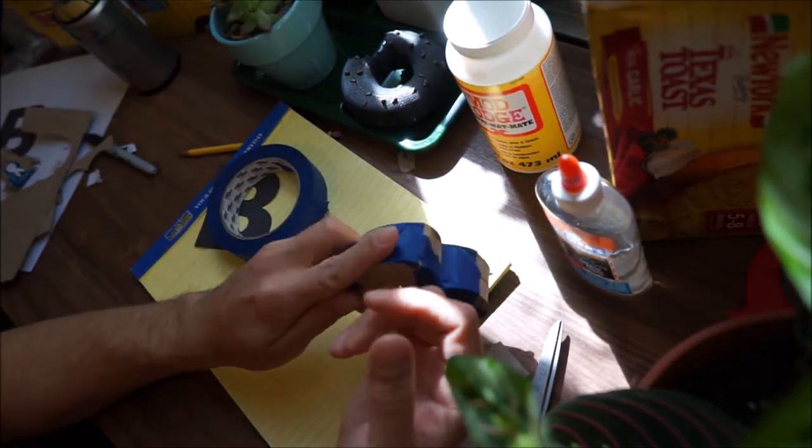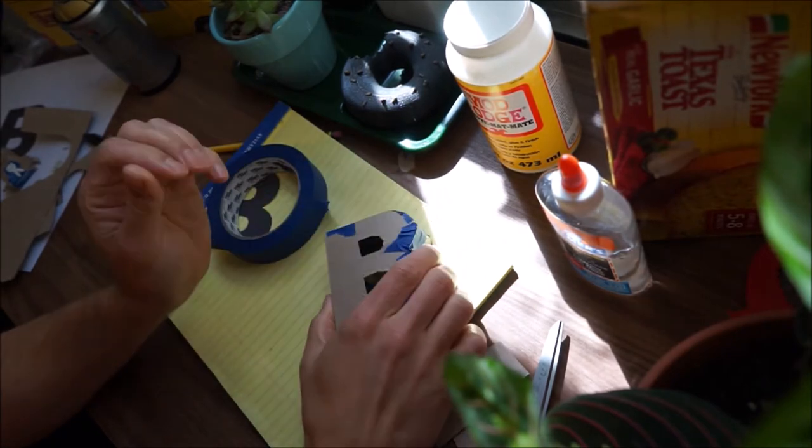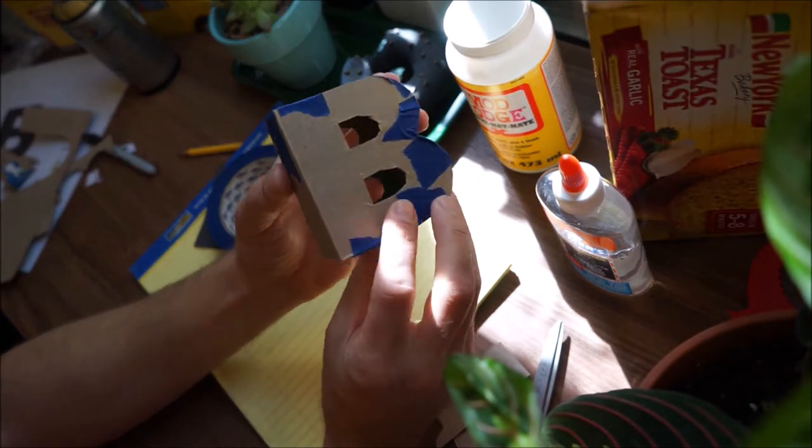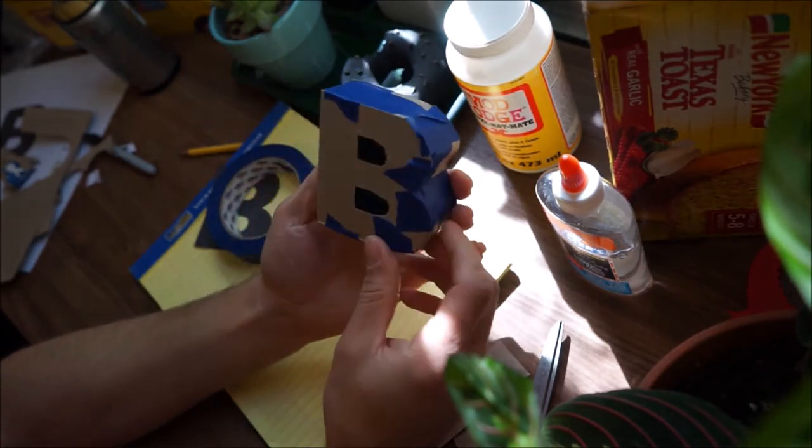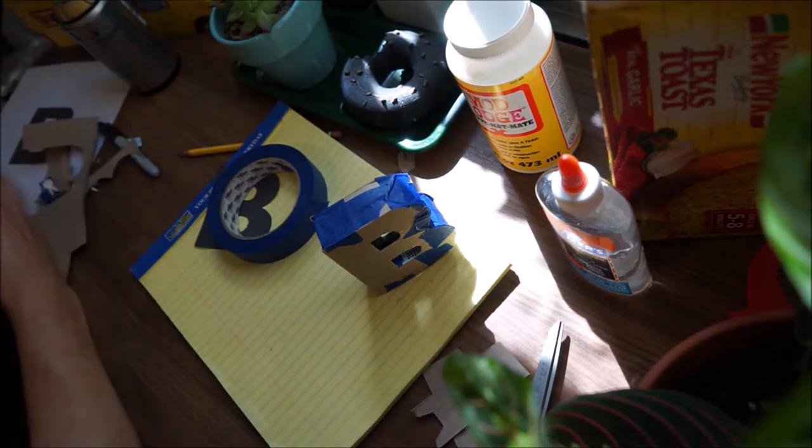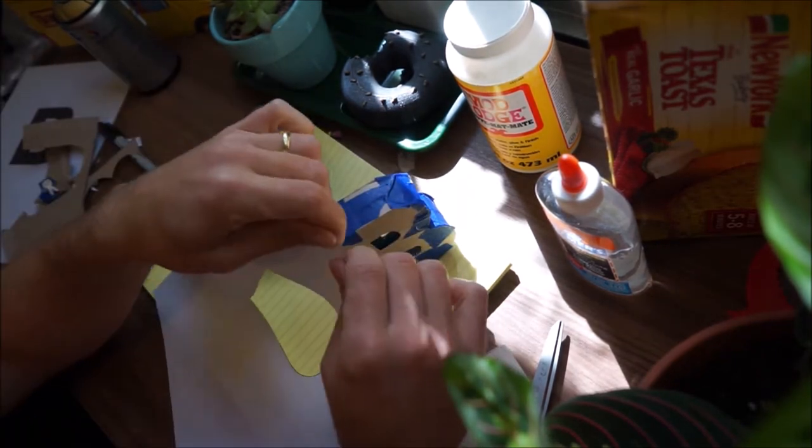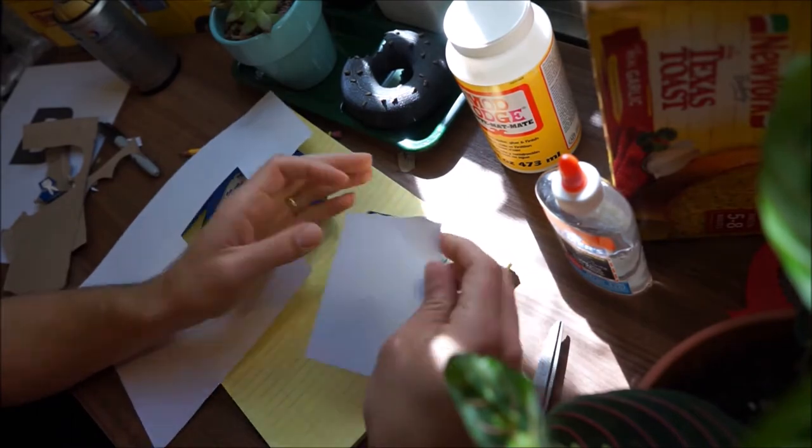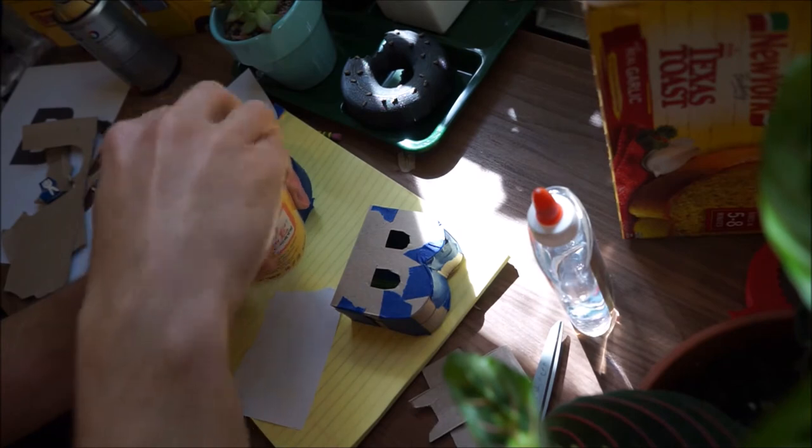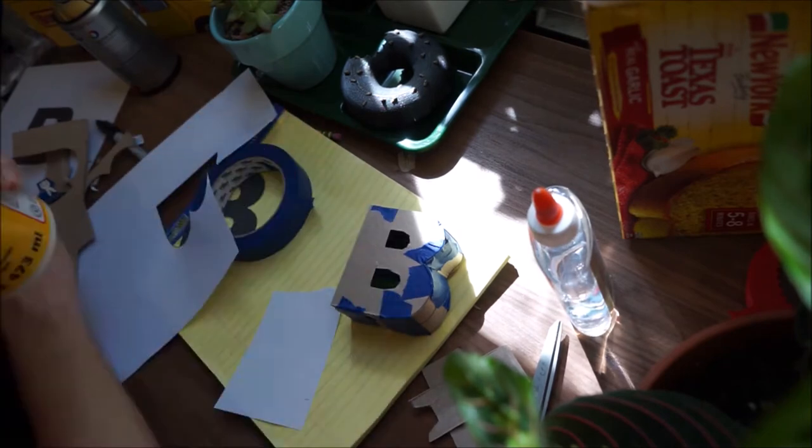And once you have it all taped up, it doesn't need to be completely taped, you can then begin to get your scrapped paper from when you cut out your letter B, and we're going to be tearing it up and paper macheing it onto our three dimensional letter. Now I'm using Mod Podge, it's great, it's fairly sticky, it's kind of the consistency you want for paper mache. You can also get paper mache stuff at most any craft or art store, or you can make it on your own.